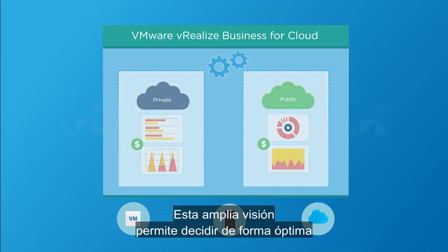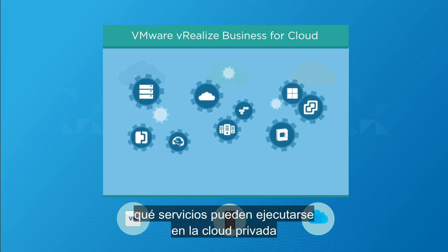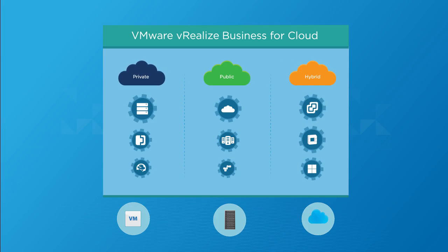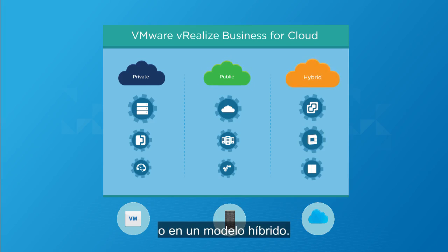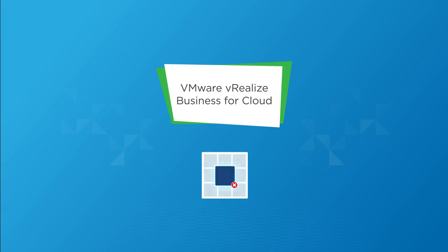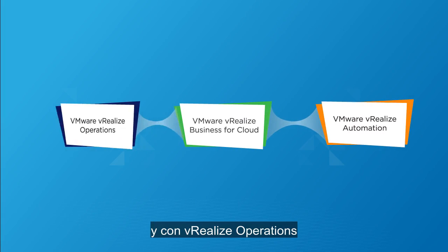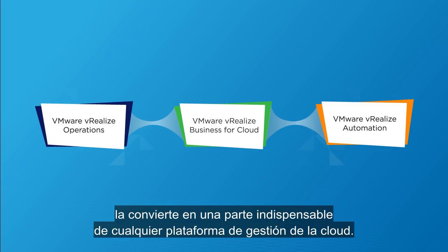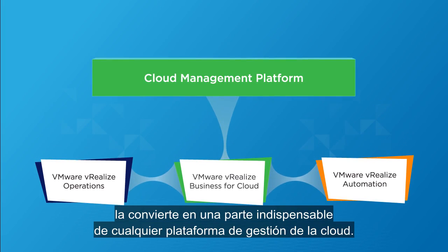This comprehensive viewpoint enables optimal decision-making around which services can be run on private cloud and which potentially run on public cloud or in a hybrid model. But vRealize Business for Cloud isn't an isolated application. Its tight integration with vRealize Automation and vRealize Operations makes it an indispensable part of any cloud management platform.